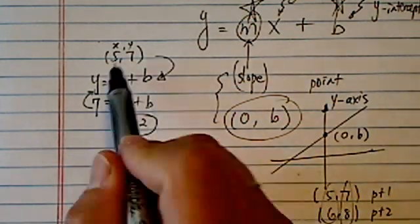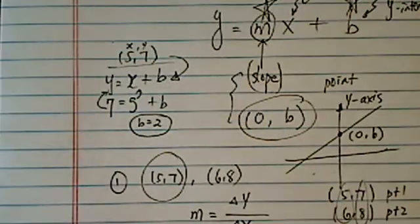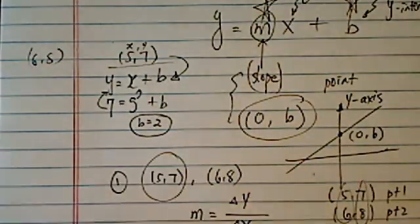If you don't like this point, for some reason you don't like 5 and 7 as your friend, let's try the other one, 6 and 8. You should get exactly the same thing.